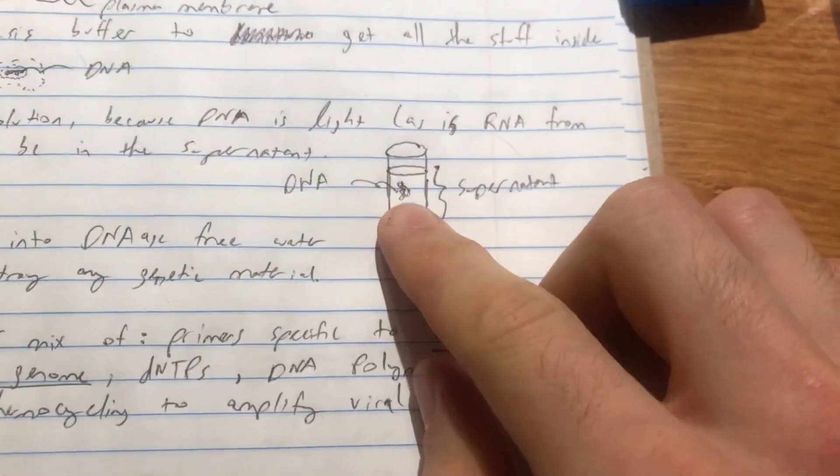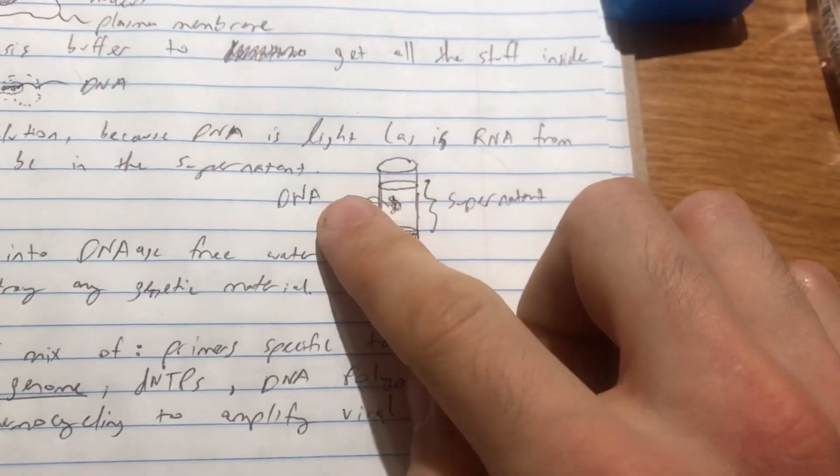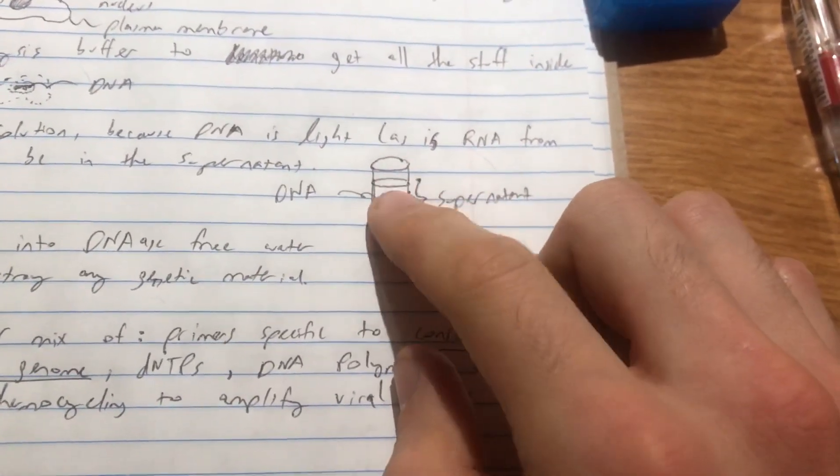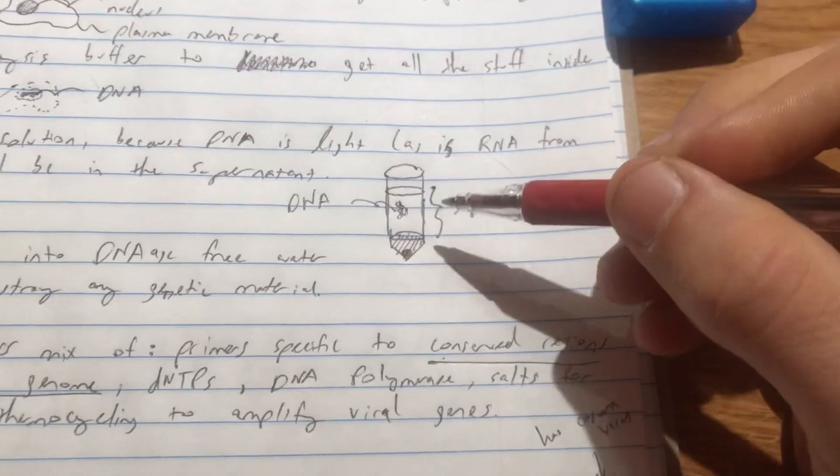So after we've centrifuged it, we do have in your supernatant the DNA as well as the RNA. And so all the genetic material that we care about is in this top part of the tube.